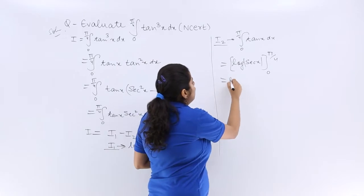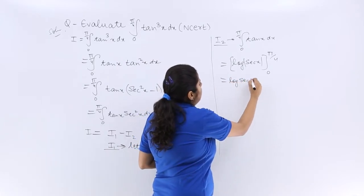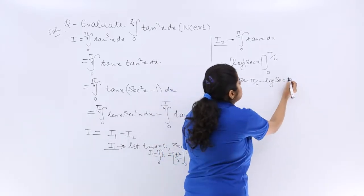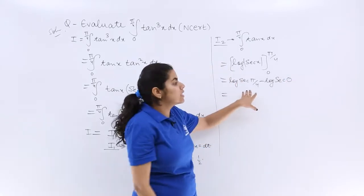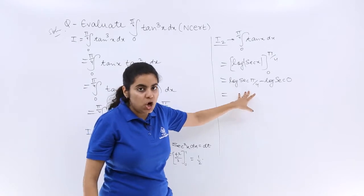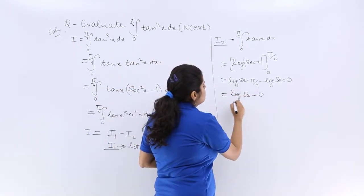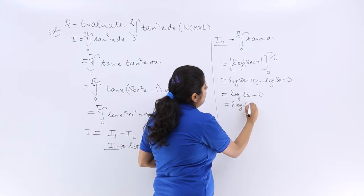Now it should be log(sec(π/4)) - log(sec0). Right? So what is log(sec(π/4))? It would be log(√2) - 0, which is only log(√2).